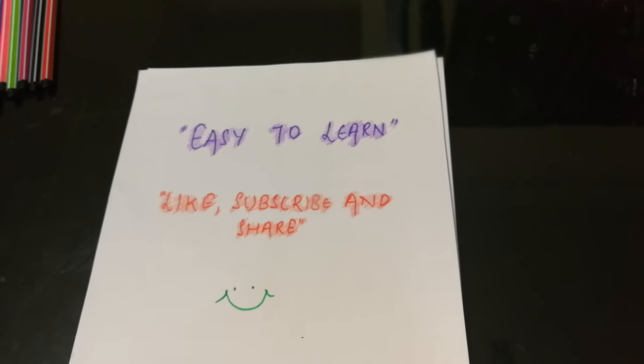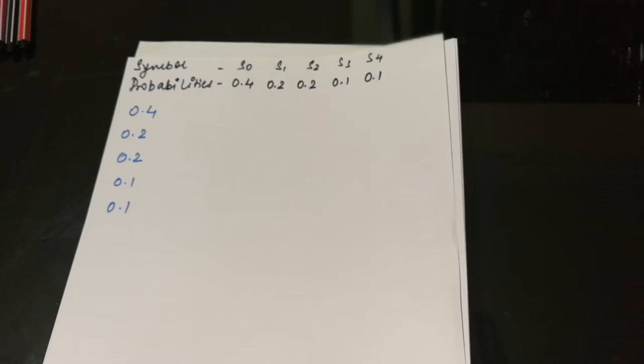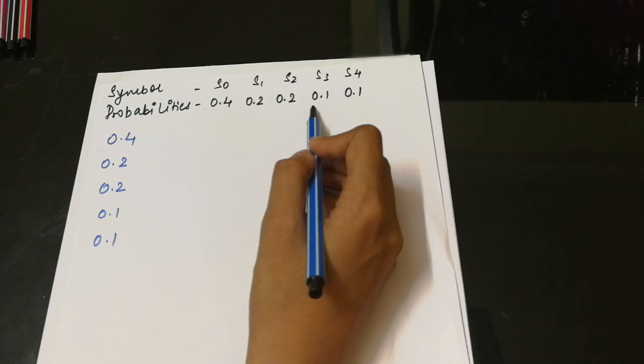Hello friends, welcome to our YouTube channel Easy to Learn. In today's video we will see Huffman coding, so let's get started. Suppose we are given the probabilities as 0.4, 0.2, 0.2, 0.1, 0.1. It is very necessary in Huffman coding to list down these probabilities in decreasing order.